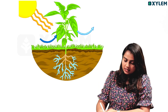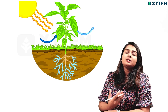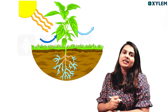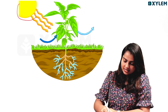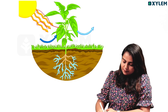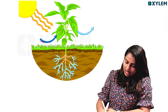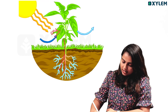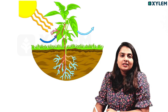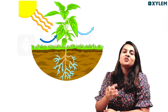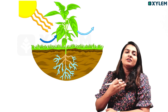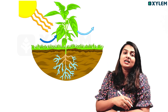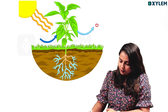Leaves absorb sunlight for energy. Using sunlight energy, along with carbon dioxide and water and minerals, the plant carries out photosynthesis. This process produces carbohydrates as food and releases oxygen.